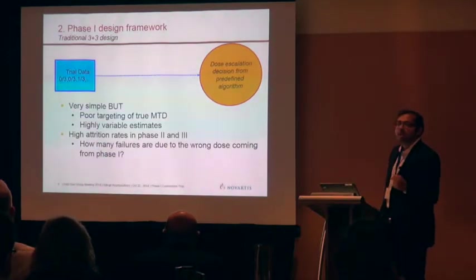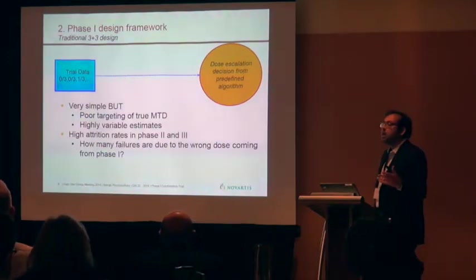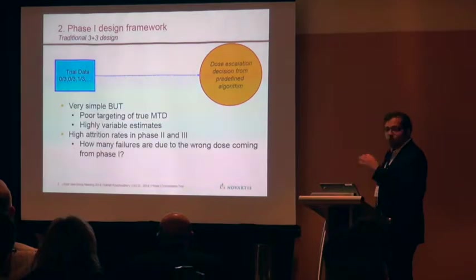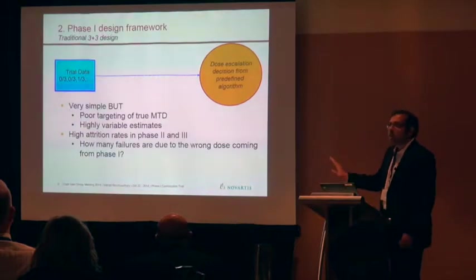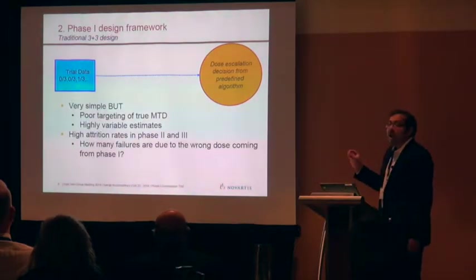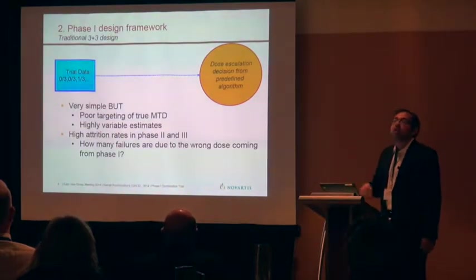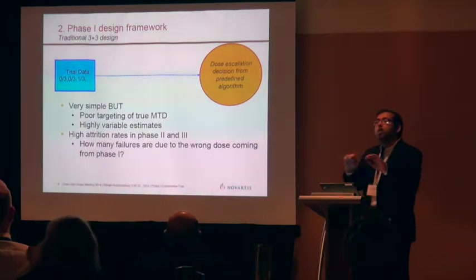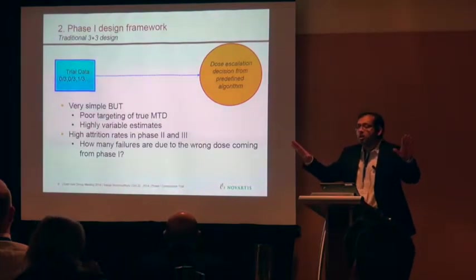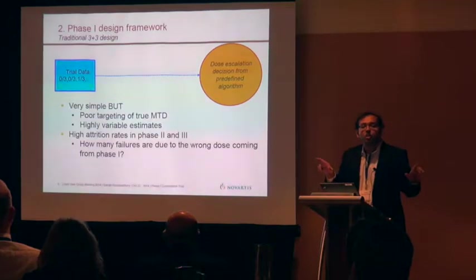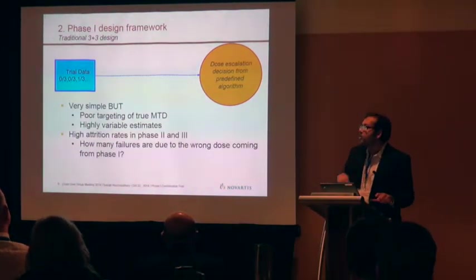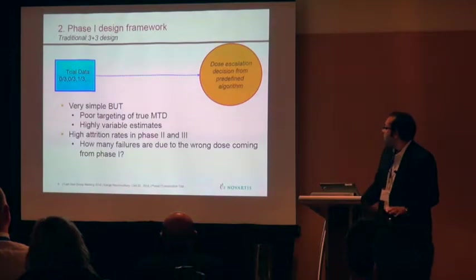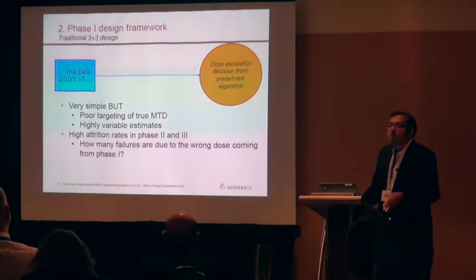The 3+3 design, which we see in a lot of combination protocols, is bad — there is honestly no statistics in 3+3. It's even worse in the combination setting because the uncertainty is even greater. You're not on a line, you're on a surface. You don't know exactly which direction to go, and 3+3, with only fixed levels, cannot give you any direction on that plane, which may cause more and more failure.